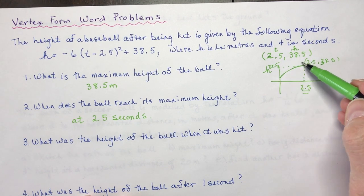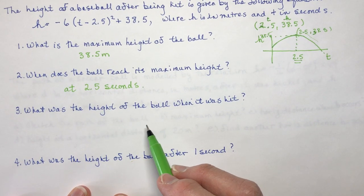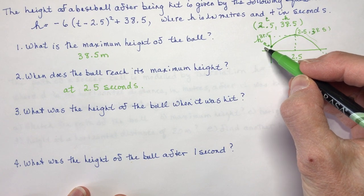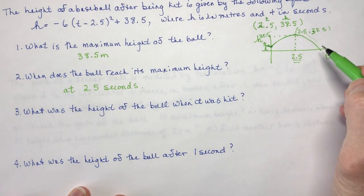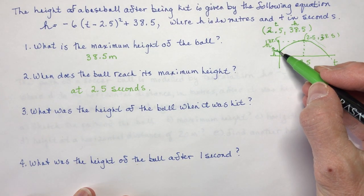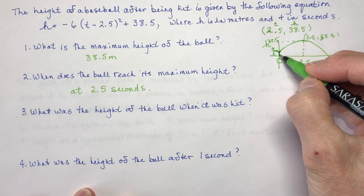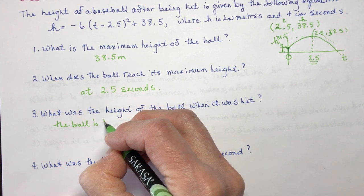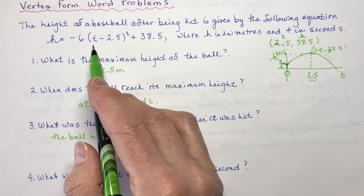What was the height of the ball when it was hit? Looking at the diagram, here's the baseball player standing with a bat — the ball is not hit from the ground; it's being hit from a certain height above the ground. Sometimes things are hit from the ground, like in a soccer example where you kick from the ground, but here the ball is hit from a certain height, and that happens at time zero.